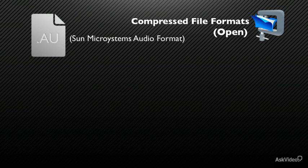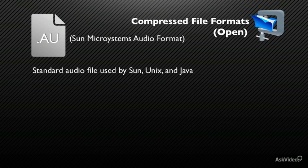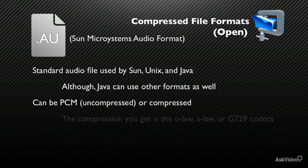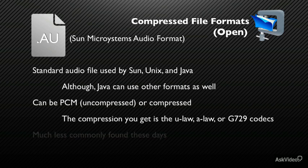An AU file is the standard audio file format used by Sun, Unix, and Java, although Java can use other formats as well. The audio in AU files can be PCM or compressed. The compression options available with AU are the ULAW, ALAW, or G729 codecs.